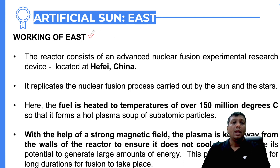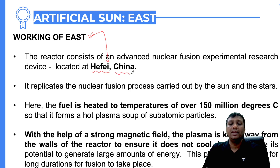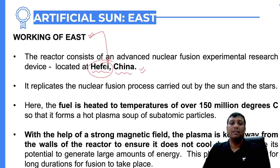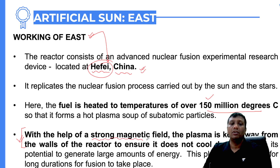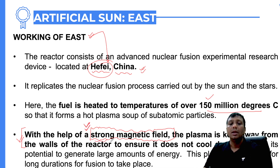The EAST reactor is set up at Hefei, China. China had to maintain a temperature of 150 million degrees Celsius in a controlled manner. To do this, China used a strong magnetic field to maintain the temperature inside the reactor and control the whole reaction. Remember these three key points: how China made it successful — with the help of strong magnetic fields.